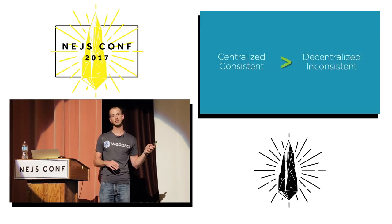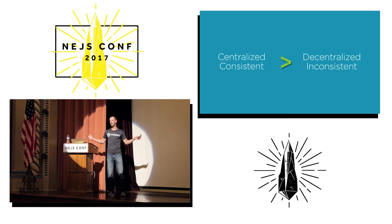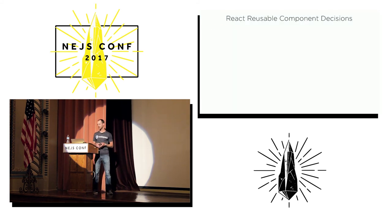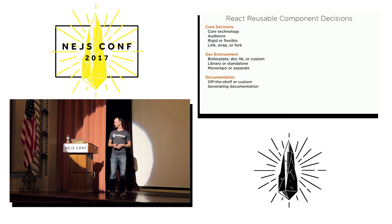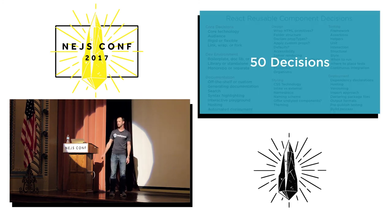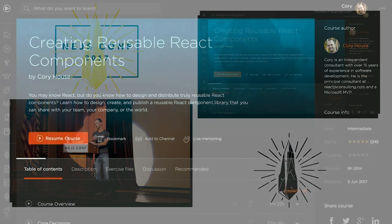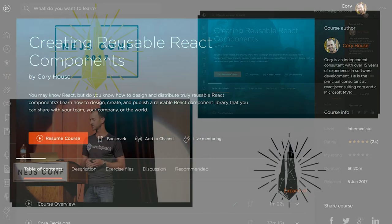Centralized and consistent is most certainly preferable to decentralized and inconsistent. Repeating yourself through copy and paste is not a design pattern that scales well. Choosing a framework is just one of many decisions — there are 50 decisions to consider when creating a reusable component library. I just published a course called Creating Reusable React Components on Pluralsight — a six-hour course covering all 50 decisions.